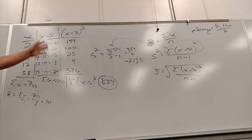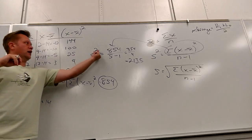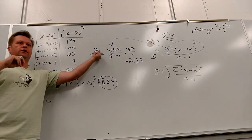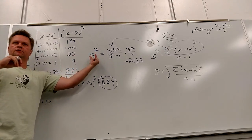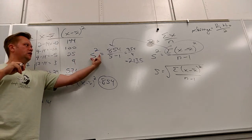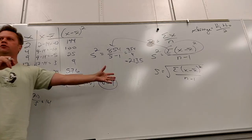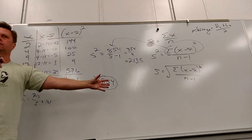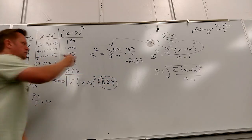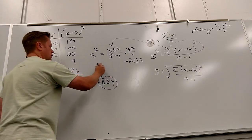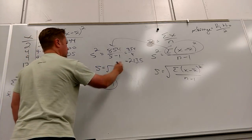That's the variance — I don't have the standard deviation yet. Because we haven't square rooted it yet. That's what the symbol is telling me: I haven't square rooted it, so it's not standard deviation yet. So the standard deviation is going to be the square root of the variance.